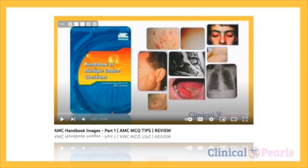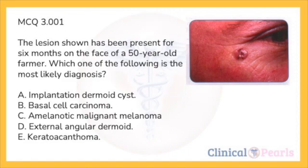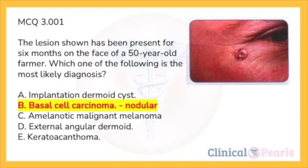The lesion shown has been present for six months on the face of a 50-year-old farmer. Which one of the following is the most likely diagnosis? A: implantation dermoid cyst. B: basal cell carcinoma. The illustration shows a typical nodular basal cell carcinoma, or BCC.